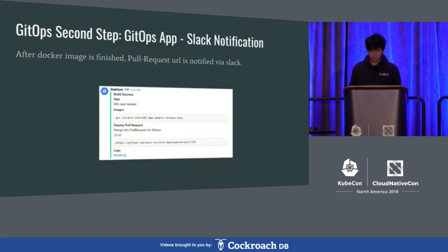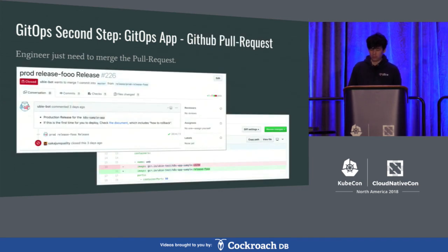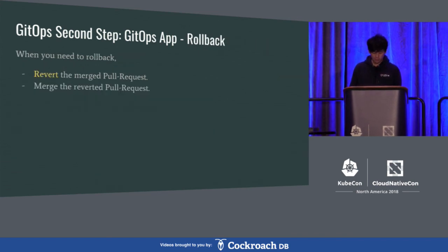This is an example I created in an example app. When the build is finished, there is a notification, and at the same time it creates a release pull request that changes the images in the Kubernetes configuration. And when I need to roll back, it is simply reverted.